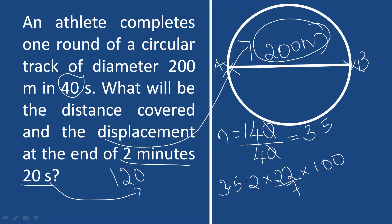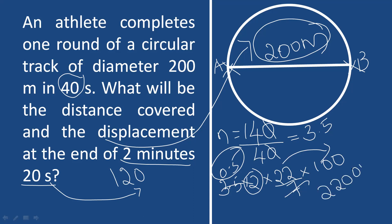We multiply the circumference by 3.5 rounds. So total distance equals 3.5 × 628.57, which gives approximately 2200 meters. The total distance covered is 2200 meters, and the displacement is 200 meters.